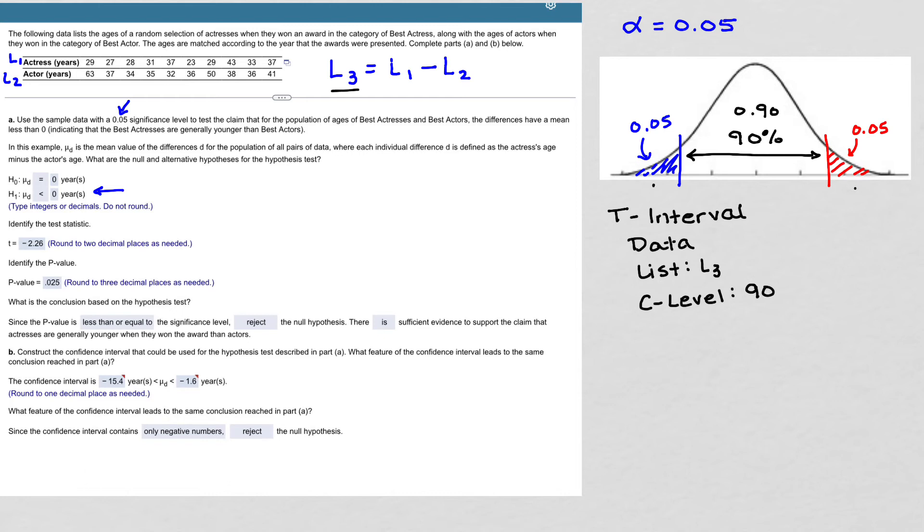And when I do that, I get negative 15.4, comma, negative 1.6.